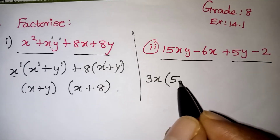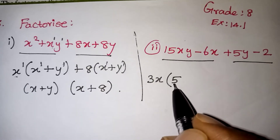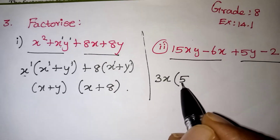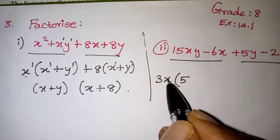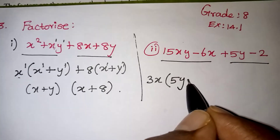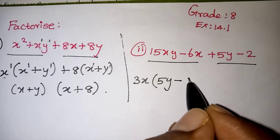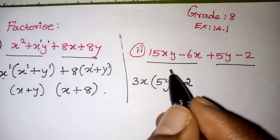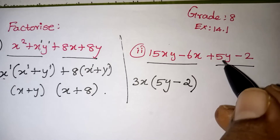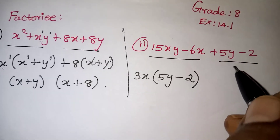After taking 3x outside from the first pair: 3 × 5 = 15, so 5y is written. Then 3 × 2 = 6, so 2 is written with the minus sign, giving the bracket (5y − 2). You should divide — for example, 15 ÷ 3 = 5, and 6 ÷ 3 = 2.